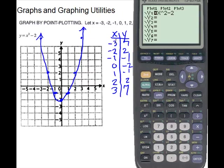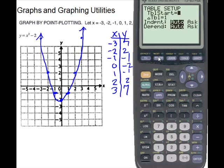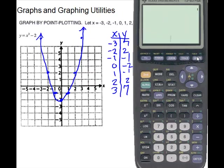Now I'm going to set the table to use those same values. To do that, press second and then the window button — you're really accessing table setup. Set the table start to negative 3, which is the lowest of our values. The increment on the table is 1, which is already set. Press enter, then go to graph — and there is our parabola.